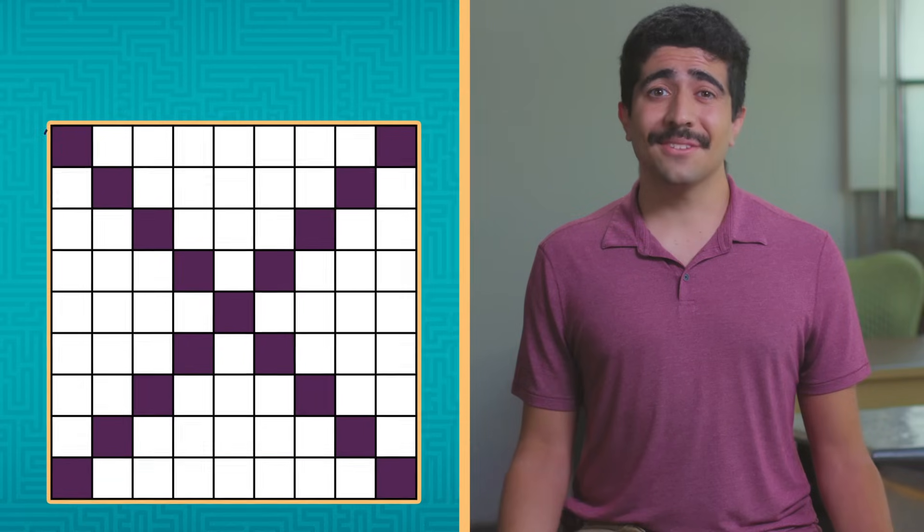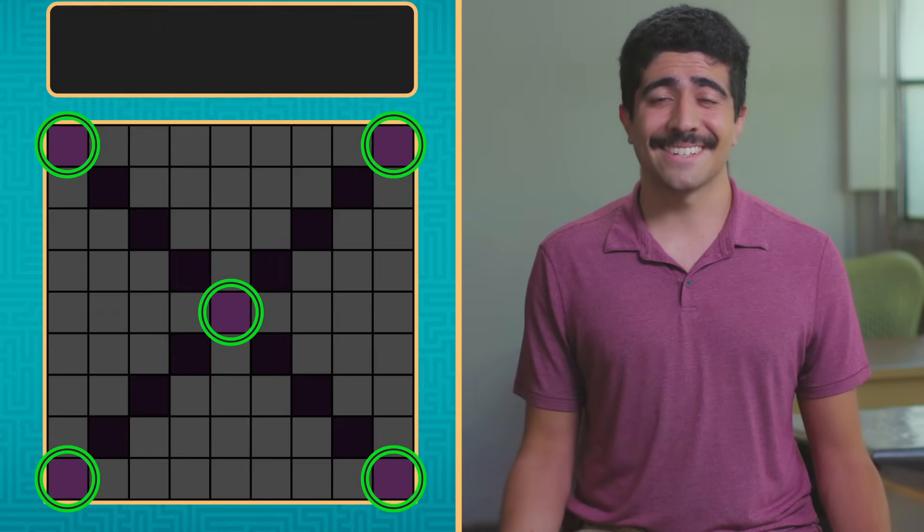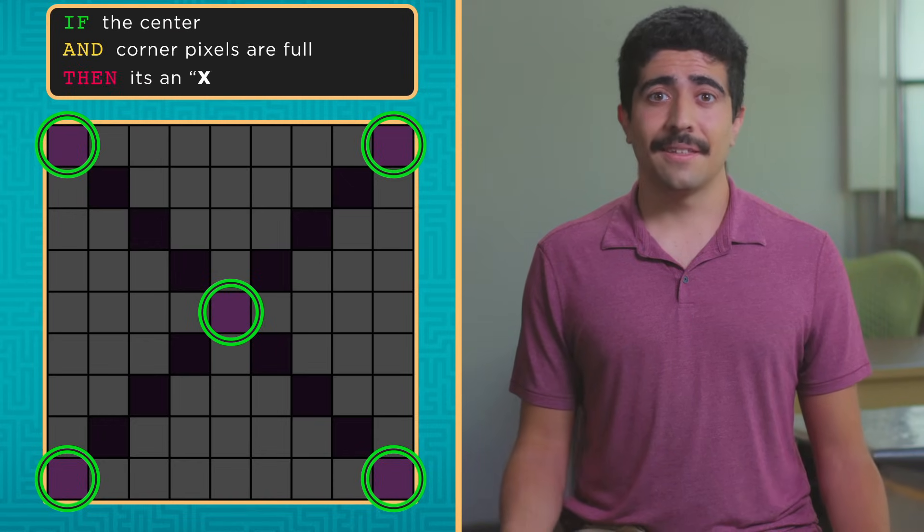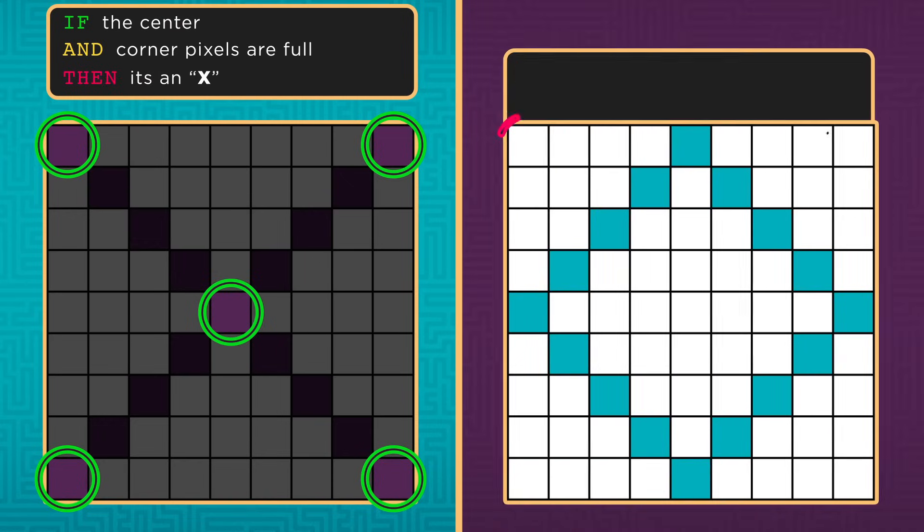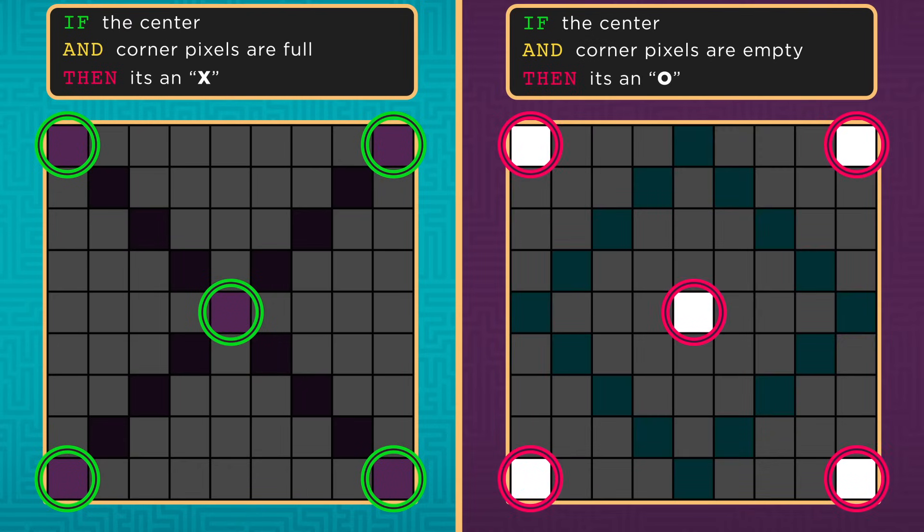In traditional programming, you could tell the computer to check which pixels are filled to decide what shape it sees. If the center and corner pixels are full, then it's an X. If the center and corner pixels are empty, then it's an O. Traditional programming works great for this kind of thing.